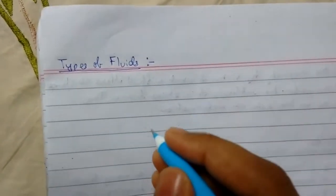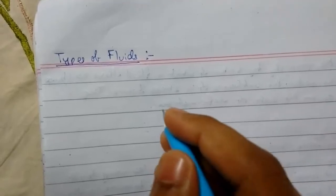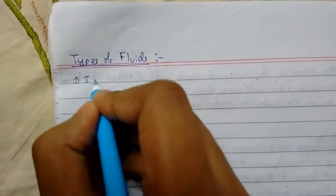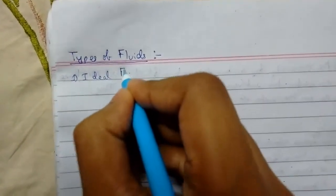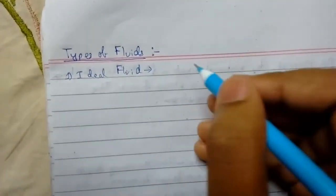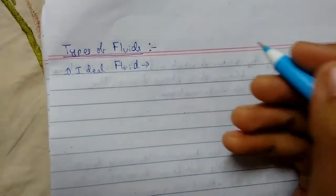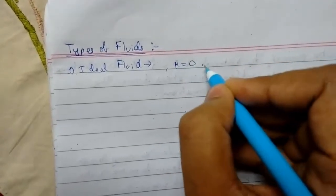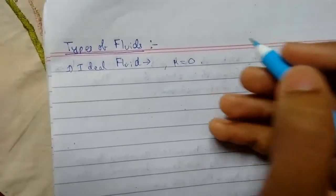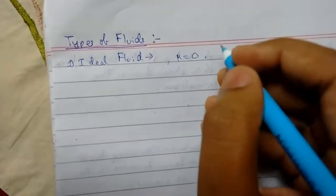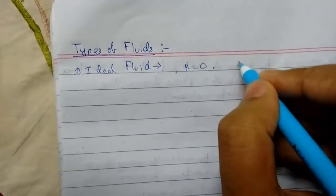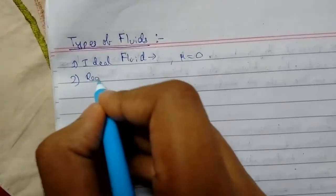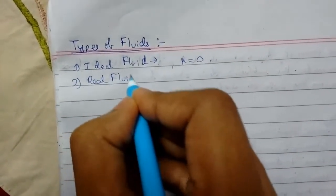Welcome back guys, today we will be covering properties of fluids. So today we will be studying about types of fluids. First is ideal fluid, so the fluid hypothetically having zero viscosity, that is mu equals to zero, is called the ideal fluid.